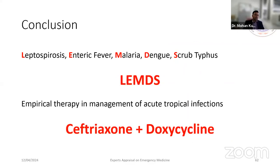In conclusion, the mnemonic we follow for tropical infections in the ED is LEMDS — Leptospirosis, Enteric fever, Malaria, Dengue, and Scrub typhus. Whenever a patient comes in the monsoon or post-monsoon season and you cannot localize the source, send LEMDS investigations and consider empirical medical therapy. Azithromycin covers leptospirosis and enteric fever; doxycycline covers malaria and scrub typhus. For dengue, there is no specific treatment. Starting empirical therapy early is cost-effective and saves lives, supported by multiple health economic studies.